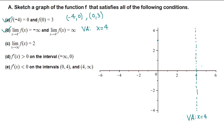When x approaches 4 from the left side, the function goes to negative infinity — so eventually when x is very close to 4, the function is going down. On the other side, from the positive side, the function is going to positive infinity.